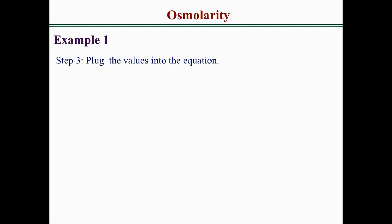Step 3 is to plug the values into the equation. If we plug our values correctly, we have the mass, which is 10 grams, the molecular weight, which is 180, our number of particles is 1 times 1000. We should be able to get 56 milliosmoles per liter.